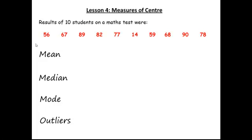The first one, the mean, is probably the most commonly used, and when people talk about average, what they mean is they've calculated the mean. The way that we do this is we add up all of the data that we have. So we would do 56 plus 67 plus 89 plus 82, and so on. We add all of them together.